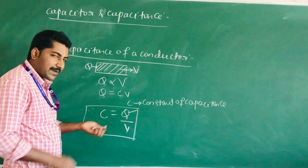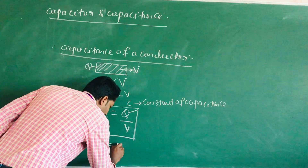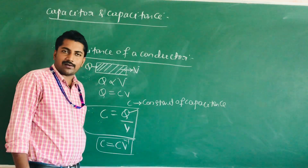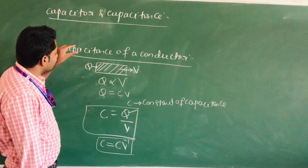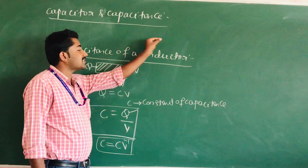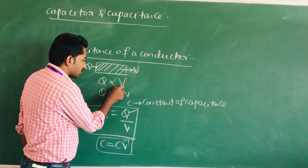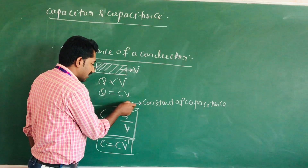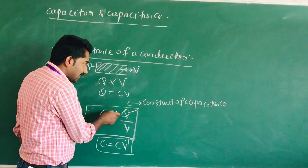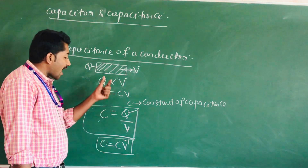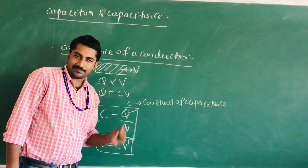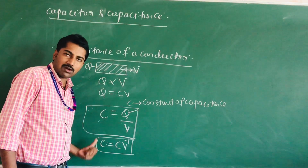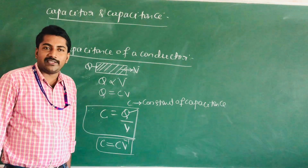The SI unit of capacitance is the Farad. The unit of capacitance C = Q / V gives Coulomb per volt, which is the Farad. The circuit symbol of a capacitor is two parallel lines. Capacitance is a scalar quantity — it has only magnitude but not direction.